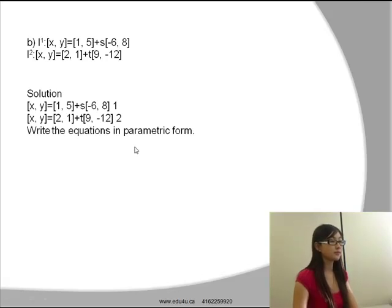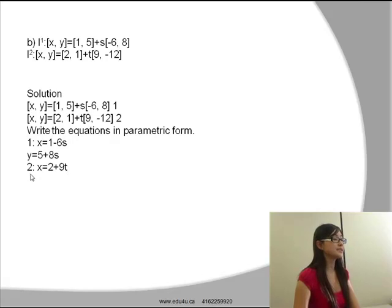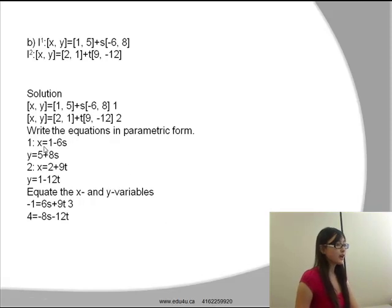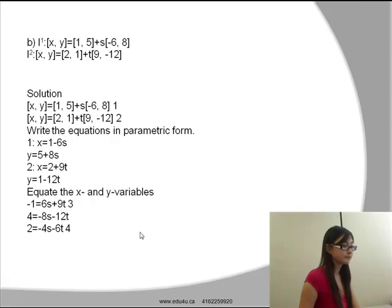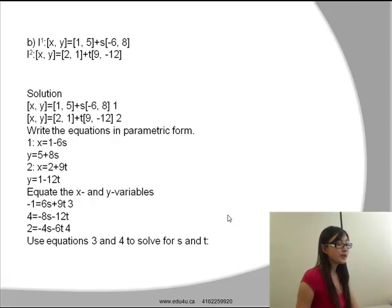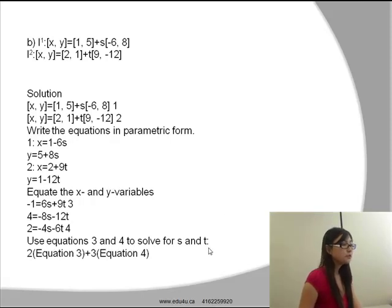When we approach this question, the first thing we have to do is write the equations in parametric form. For equation 1, we get x=1-6s, y=5+8s. For the second equation, we get x=2+9t and y=1-12t. Now we have to equate the x and y variables. When we make the x value of line 1 equal to the x value of line 2, we will get -1=6s+9t. And let's make that equation 3. When we equate the y value from line 1 to the y value from line 2, we will get 4=8s+12t. And let's name that equation 4.